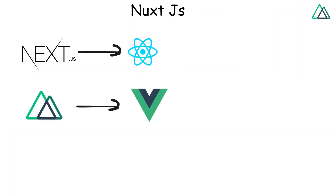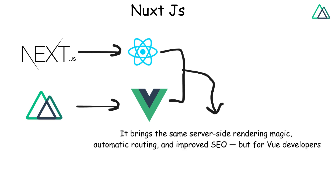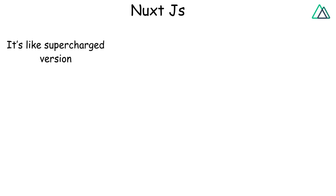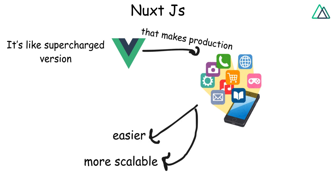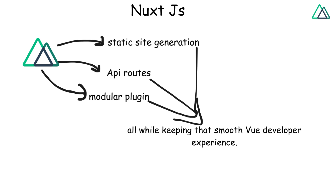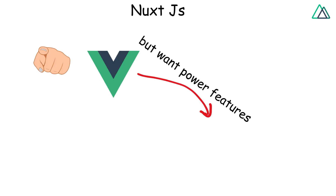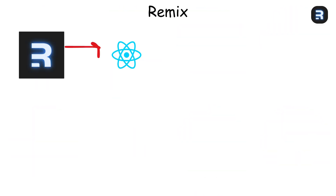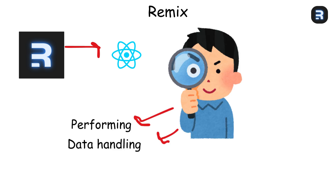Nuxt.js brings the same server-side rendering magic, automatic routing, and improved SEO — but for Vue developers. It's like a supercharged version of Vue that makes production apps easier and more scalable. Nuxt also offers static site generation, API routes, and modular plugins, all while keeping that smooth Vue developer experience. If you love Vue but want power features, Nuxt is your best friend.